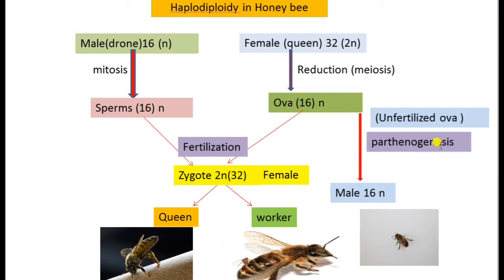If the ova develop by parthenogenesis — that is, without the union of sperm — they become males. The haploid number of chromosomes, which is 16 (n), is retained, and they develop into males, otherwise known as drone bees.